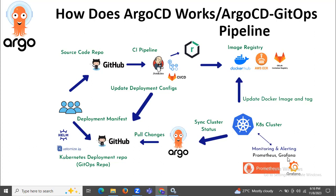When using ArgoCD, you can specify application configuration using several types of Kubernetes manifests, including plain YAML or JSON manifests, Helm charts, Kustomize, and Jsonnet applications. It is also possible to use any custom configuration management tool as a plugin. ArgoCD automatically deploys the desired state of an application to the specified target environment, supporting tags, branches, or a pinned specific version of a manifest at a Git commit.